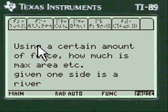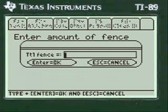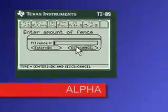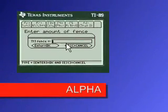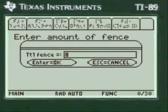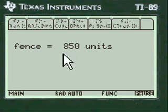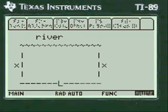Using a certain amount of fence, how much is the maximum area given one side is a river? You have to press alpha before you put any numbers or characters in these lines of my programs. We'll press alpha and put in 850 for the maximum fence that you have to work with. I always show you what you've entered so you can change it if you want. Say it's okay.